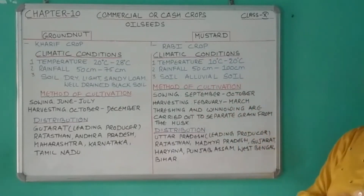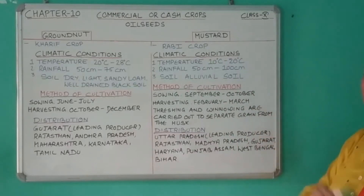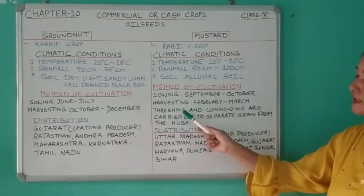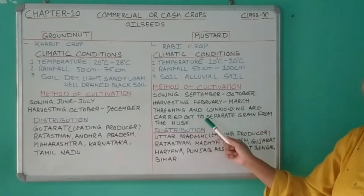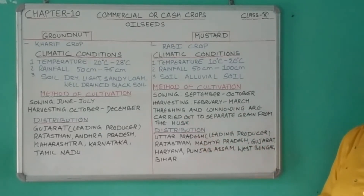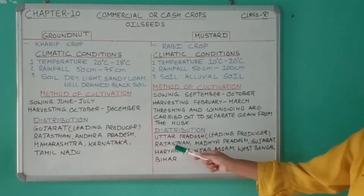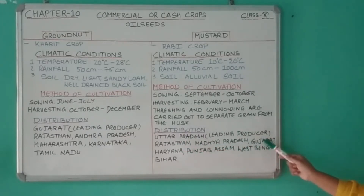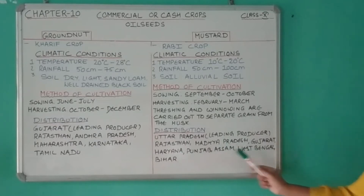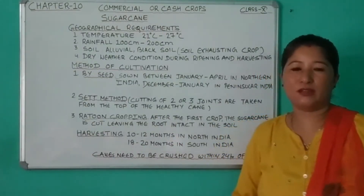The method of cultivation for mustard: it is propagated by seed. Sowing is in the months of September to October, and it is harvested in February to March. After harvesting, threshing and winnowing are also carried out to separate the grain from the husk. The distribution: Uttar Pradesh is the leading producer of mustard, followed by Rajasthan, Madhya Pradesh, Gujarat, Haryana, Punjab, West Bengal, and Bihar.